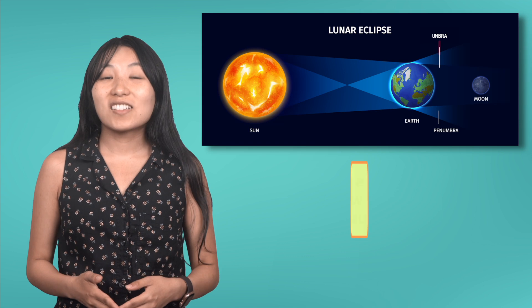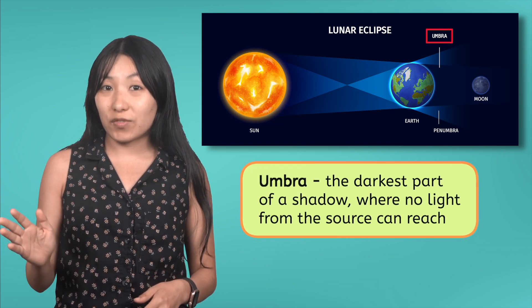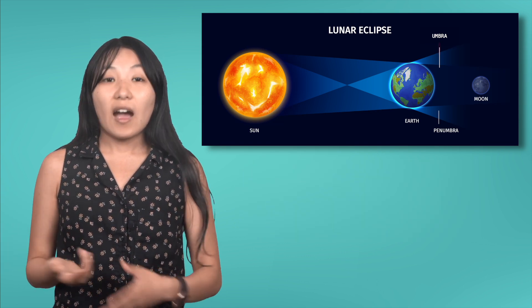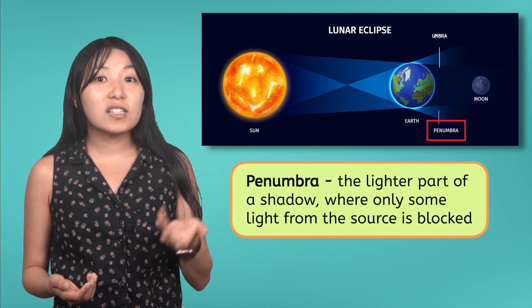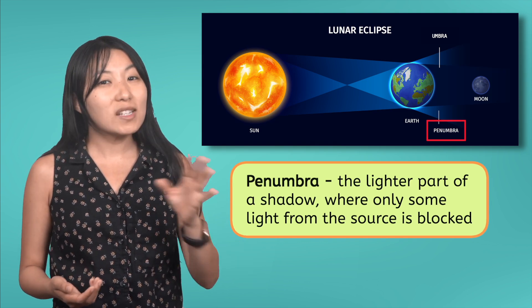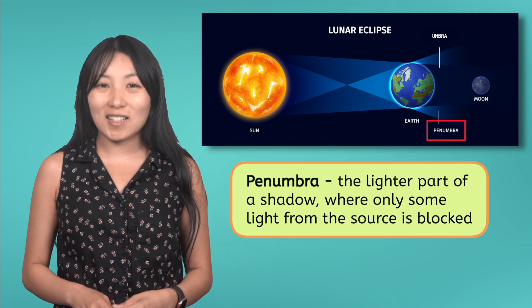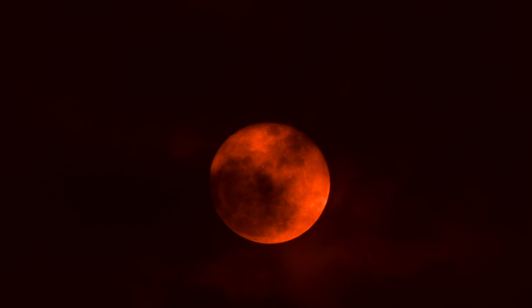Right. There's the Umbra, which is the darkest part of a shadow where no light from the source can reach, and the Penumbra, which is the lighter part of a shadow where only some light from the source is blocked. And as with a total solar eclipse, during a total lunar eclipse, the Umbra is where that magic happens.